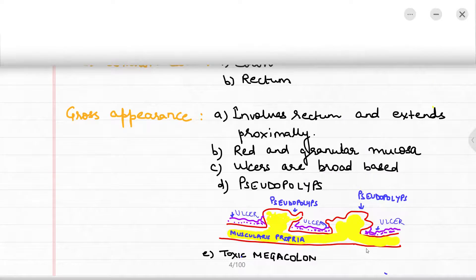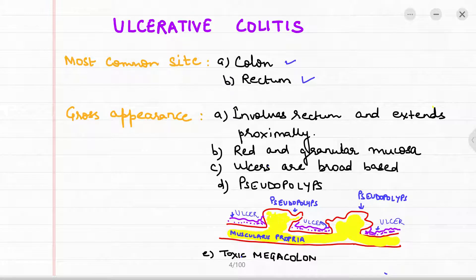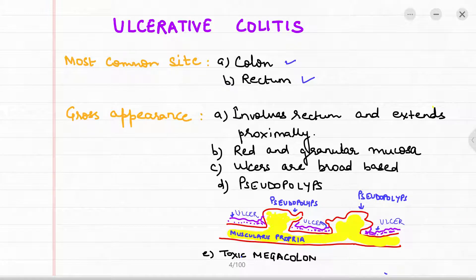Moving on to ulcerative colitis: the most common sites are the colon and the rectum. On gross appearance, it involves the rectum and extends proximally. The mucosa is red and granular, and the ulcers are broad-based. There are also pseudo polyps, which result from the cycle of ulceration and healing, leading to the creation of scar tissue that resembles a polyp.